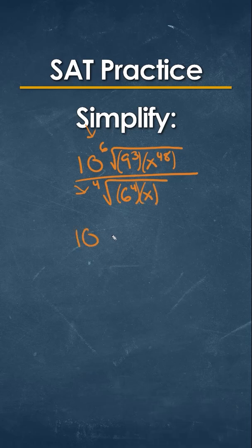So we'll get 10 times 9 raised to the 3 over 6 times x raised to the 48 over 6, over 6 raised to the 4 over 4 times x raised to the 1 over 4. We can simplify this now.